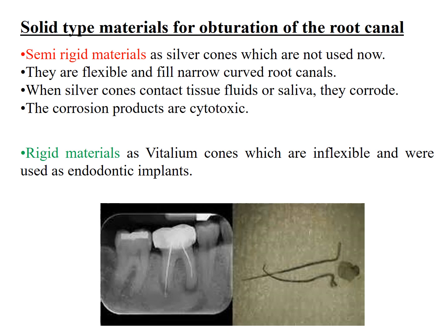Solid materials for obturation include semi-rigid materials, which are now outdated and no longer used, such as silver cones. Silver cones were flexible and used to fill narrow curved canals, but when they contact tissue fluid or saliva they corrode, and these corrosion products are cytotoxic. There are also rigid materials like vitallium cones, which are inflexible and were used as endodontic implants placed through the root canal and extruded outside. This is really outdated.